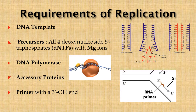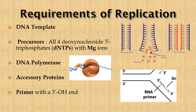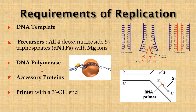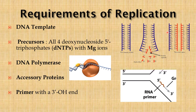Now let us talk about the four major requirements for replication. First is the DNA template: it provides the necessary scaffold for the binding of nucleotide triphosphates, which are the precursors, with the help of magnesium ions. Second is DNA polymerase, an enzyme which helps in polymerizing the nucleotides with the help of accessory proteins like helicases, topoisomerases, and DNA gyrases. Finally, the RNA primer with the 3' hydroxyl end acts as a stepping stone for DNA polymerase to give rise to two new strands of DNA in a process called semi-conservative replication — that is, each new strand has one strand of the old one.